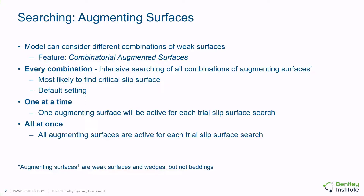The one-at-a-time method considers one augmenting surface to be active for each trial slip surface search. It's a faster method, but not as comprehensive. The all-at-once setting considers that all augmenting surfaces are active for each trial slip surface search. With the all-at-once method, the uppermost of all weak surfaces is the only one considered if there are more than one weak surface in a model. These settings may be found under the model settings dialog under the advanced tab.